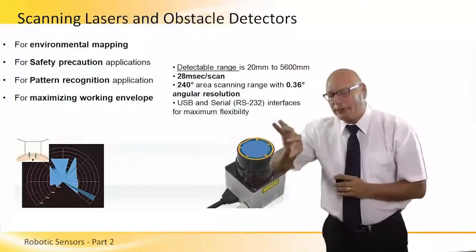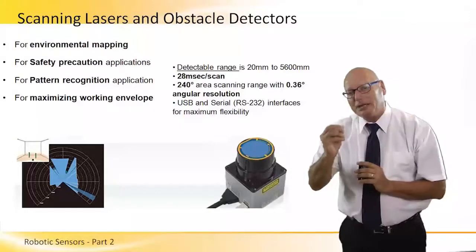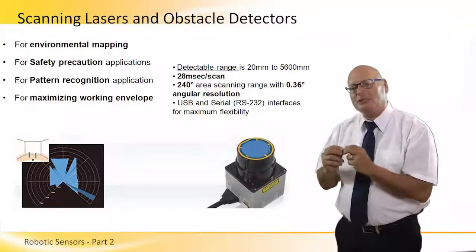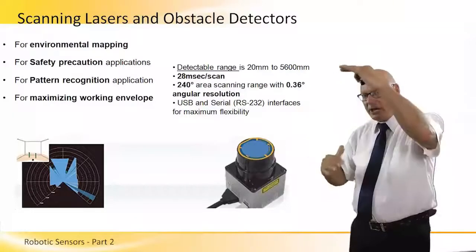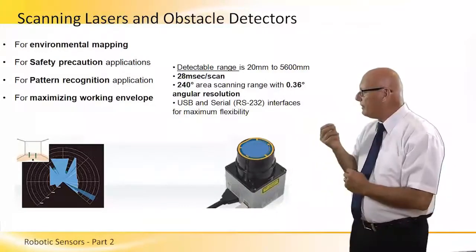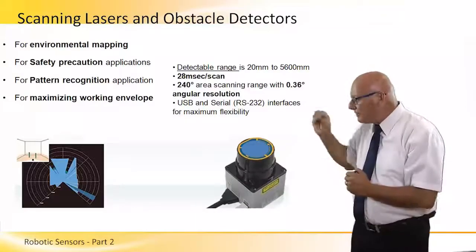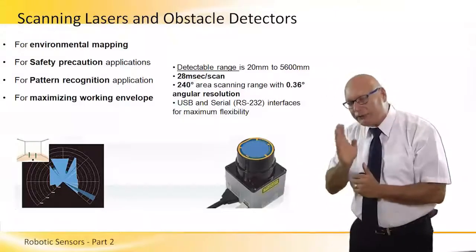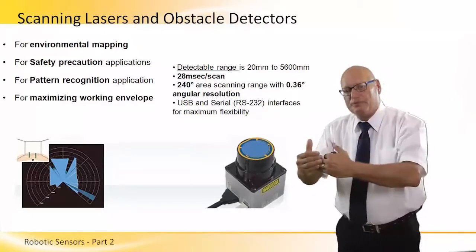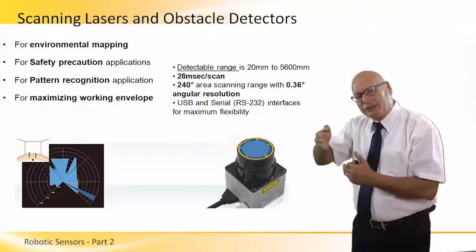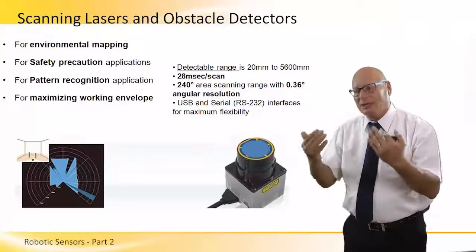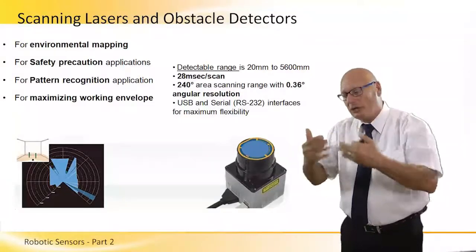The information on the right-hand side tells us about some very important technical parameters. The detectable range is 20 millimeters to 5600 millimeters, so we get a very large and very detailed picture. The way we get these high-resolution pictures is by having a very fast scanning time — in this example, 28 milliseconds per scan. So as the robot moves, there are many pieces of information captured every 28 milliseconds, giving us a very accurate, real-time picture no matter where the robot is.